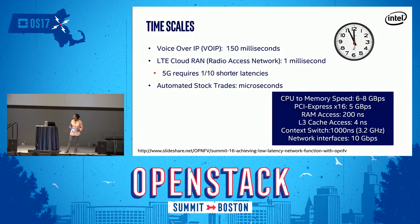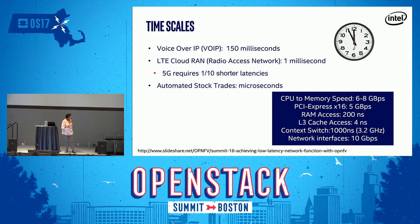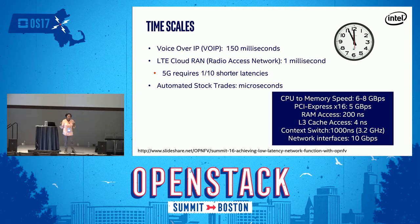Let's talk about latency and jitter, and what time scales we're looking at. Voice over IP is about 150 milliseconds. Radio access networks are about a millisecond, but things are getting even smaller. We're looking at one-tenth of that for 5G. Automated stock trades are looking at microsecond timescales. Now look at your platforms: CPU to memory retrieval is about 6 to 8 gigabits per second. PCI Express is around 5 gigabits per second with 16 lanes. RAM access is about 200 nanoseconds, and if you find data in your last-level cache on an Intel processor, you're talking about 4 nanoseconds.